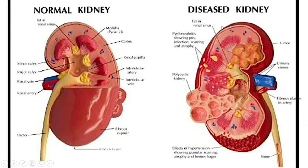Here's another example showing a few different issues that could all fall under the term 'diseased kidney.' Here you have a tumor, here you have some infection and scarring, you have stones here, and also this atrophy that was on the last picture. And then here's a polycystic kidney, which we looked at yesterday.